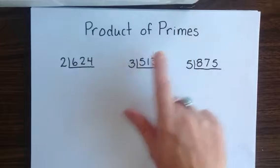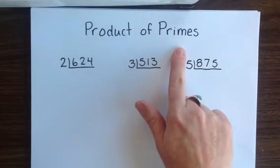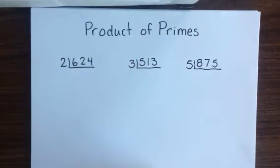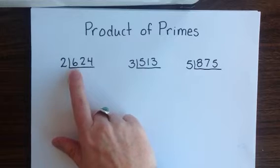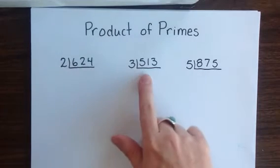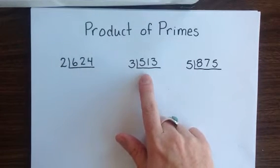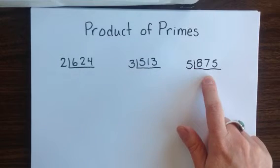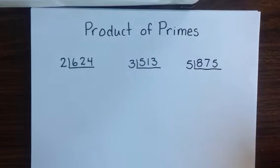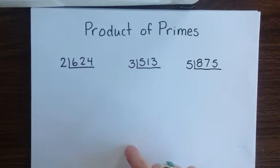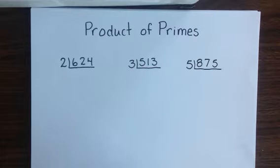So if we're creating a product of primes, what we're doing is taking our original numbers — in this case 624, 513, and 875 — and breaking them down until they are just a string of prime numbers that, when multiplied back together, would get us back to our original number.